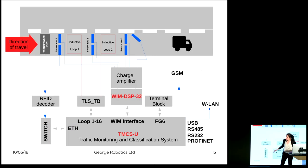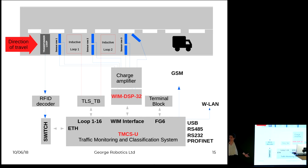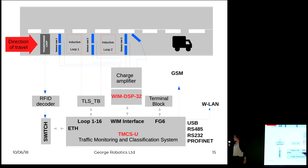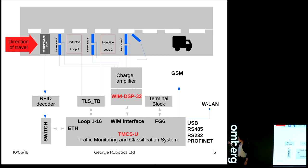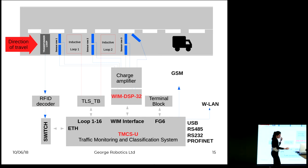Weigh-in-motion basically means you have the road with three lines of sensors that can measure the weight of a truck. When you have a potentially overloaded truck coming through, it gets categorized by how much it is actually allowed to weigh. It's connected to a charge amplifier and the data is collected in their traffic monitoring system.